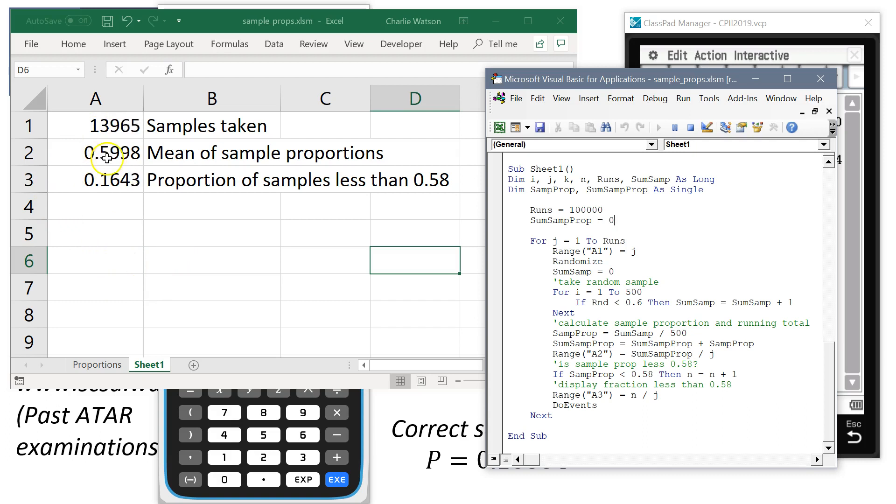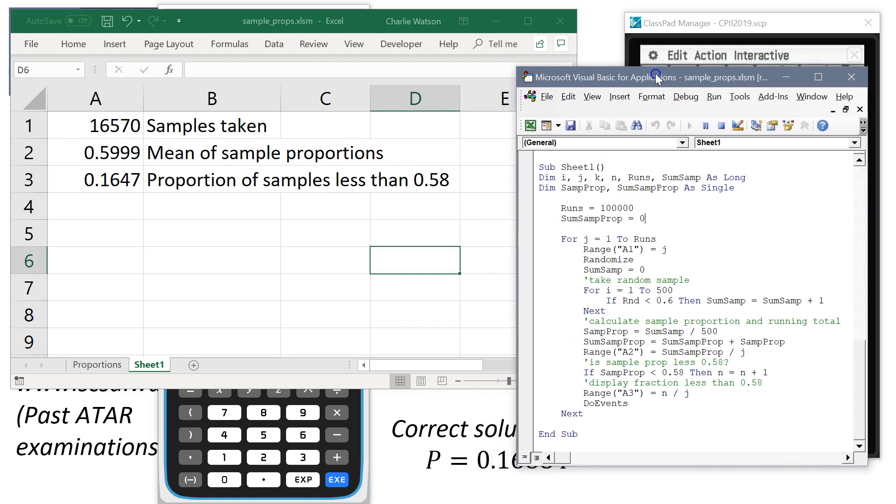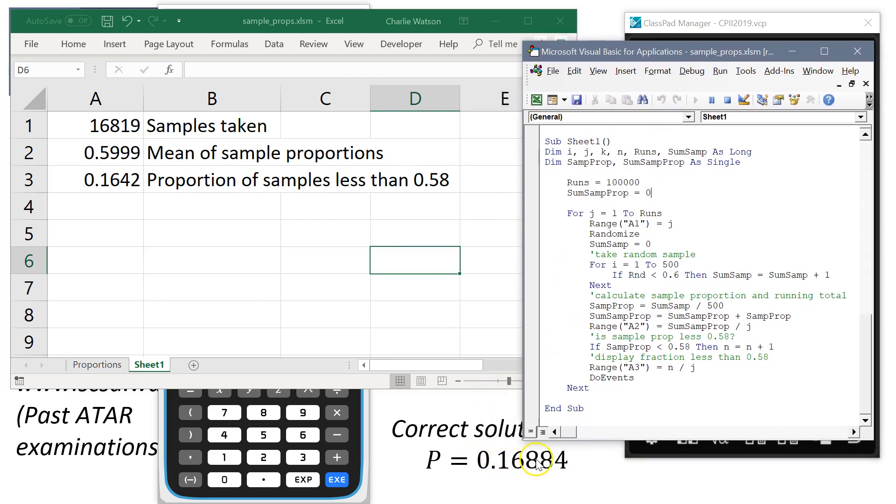But you can see, in the long run, the mean is settling down. We expect this to be 0.6. And this one we were after, it was 0.16884. It's a bit low at the moment. But we're a lot closer than the examiner's one, aren't we? Anyway, I'll pause. We'll come back in a second.